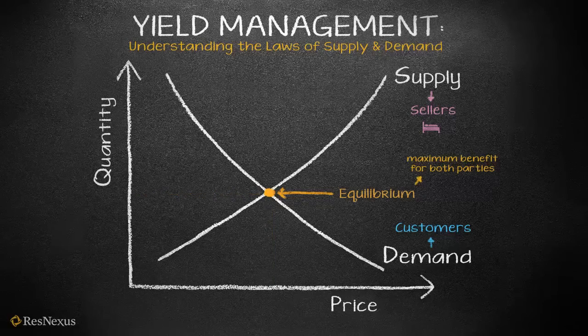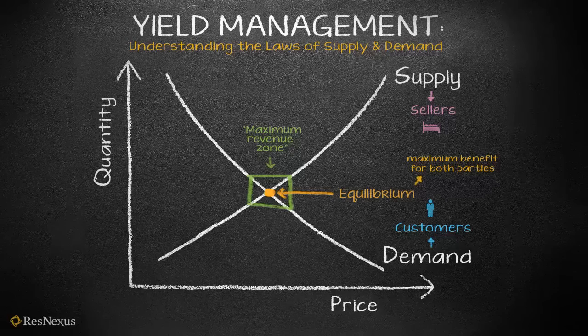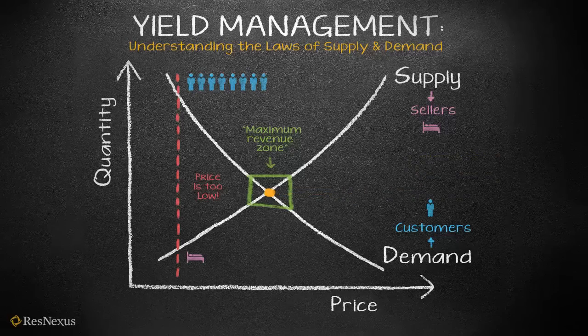Now let's see what happens to supply and demand in the real world. You have rooms to sell, and you want customers to fill those rooms. So you've got to find the price point that keeps demand strong, but not so strong that supply suffers. It's a total balancing act to stay as close to equilibrium as possible. We'll call this the maximum revenue zone. If you set your prices too low, you'll have excess demand — customers lined up wanting what you have, but you're running low on inventory. Think of Black Friday.